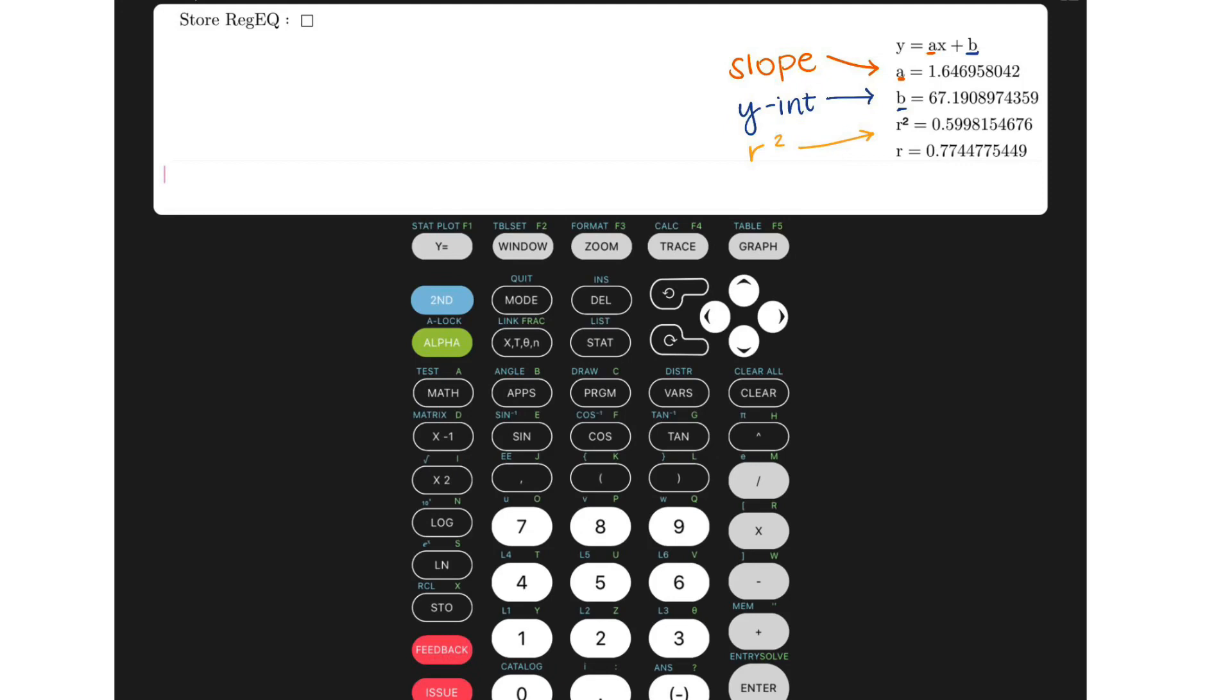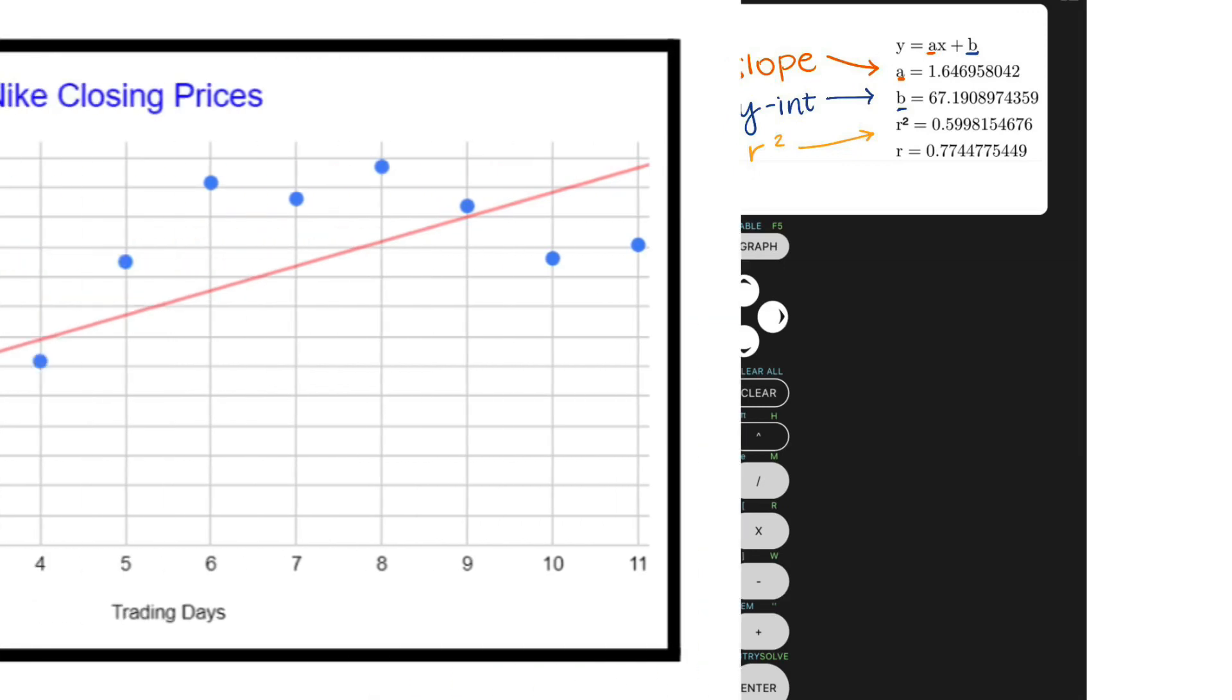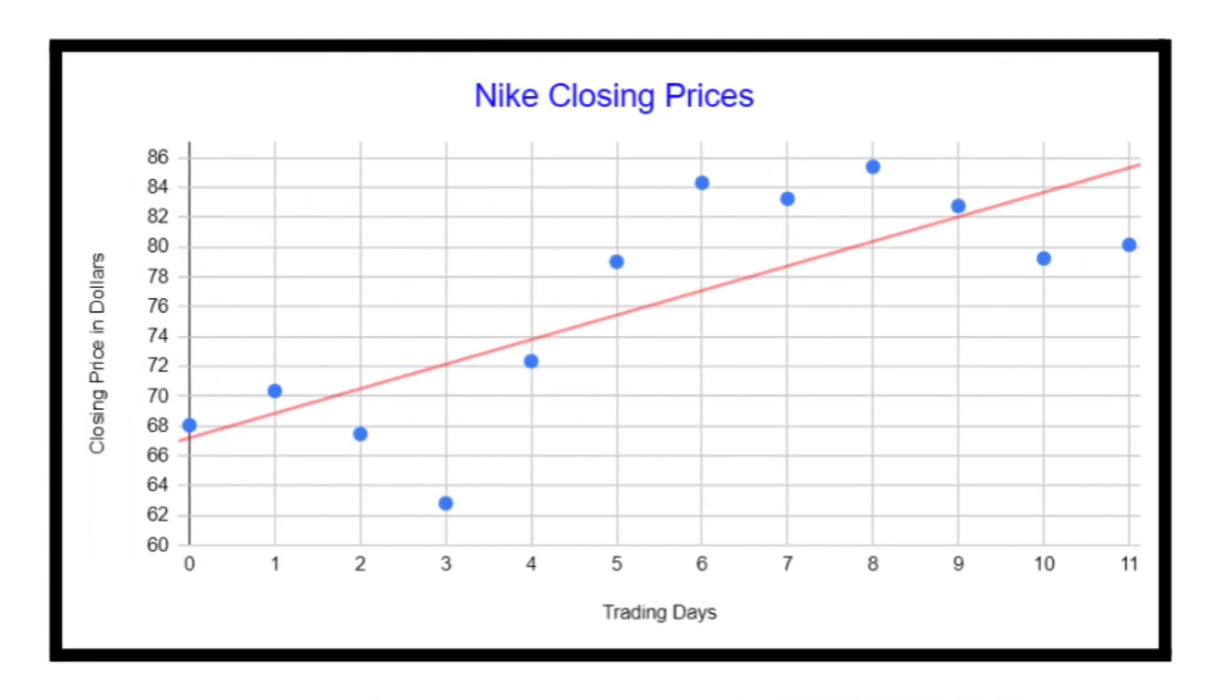After identifying these key points, let's answer question C to write the equation of the line of regression in Y equals AX plus B form. Substituting the values from our results, our linear equation is Y equals 1.65X plus 67.19. From there, you can draw your trend line on the graph. Be sure to check out our budget graphing video to learn how to graph a linear equation.